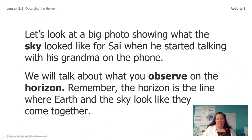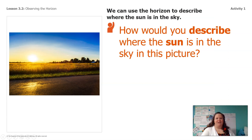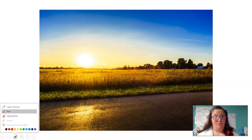Let's look at that big photo that shows what the sky looked like for Sai when he started talking to his grandma on the phone. We'll talk about what you observe on the horizon — that imaginary line where the earth and the sky look like they come together. So let's look at the horizon in this picture. What do you guys notice about the horizon in this picture? How would you describe where the sun is in the sky in this picture?